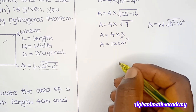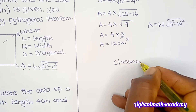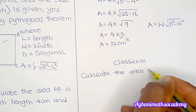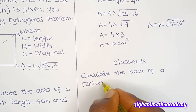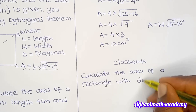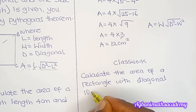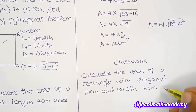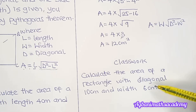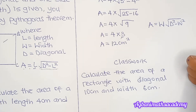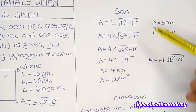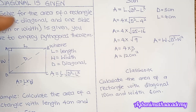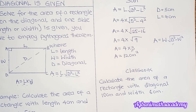Classwork: Calculate the area of a rectangle with diagonal 10 centimeters and width 6 centimeters. Unlike the first question, here we are given the diagonal and the width, so instead of the previous formula, we use A = w × √(d² − w²). If you enjoyed the video, don't forget to like, share it with your friends, and subscribe to this YouTube channel for more math content. See you in the next video!